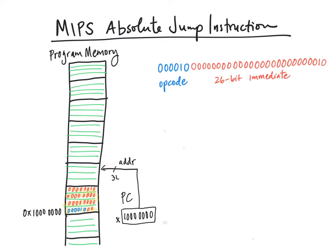Every address in the MIPS instruction set is 32 bits long. Now we want to use the absolute jump instruction to update the program counter, and we'd love to be able to tell it exactly what 32 bits we want to change it to.